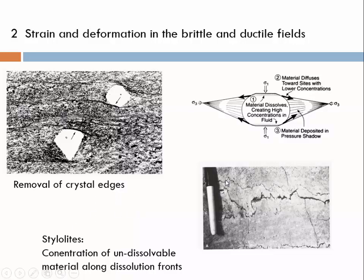What we see here is typically observed in carbonate rocks. These are things that look like fever curves — zigzagging surfaces that typically contain dark material. This is undissolvable material in a carbonate rock. Along these so-called stylolites we find the concentration usually of graphite in marble. This concentration of graphite comes from the removal of carbonate, and along the stylolite surface we find a mixture of carbonate and graphite. We find less carbonate and more of the material that could not be dissolved.